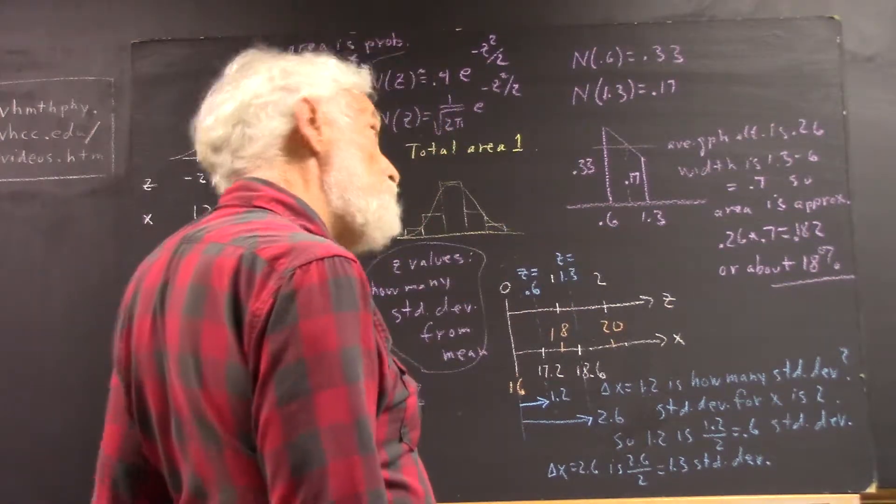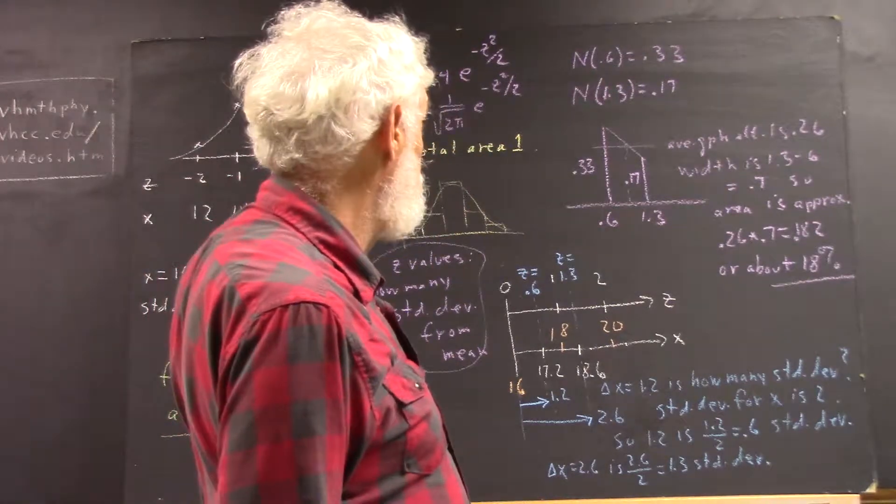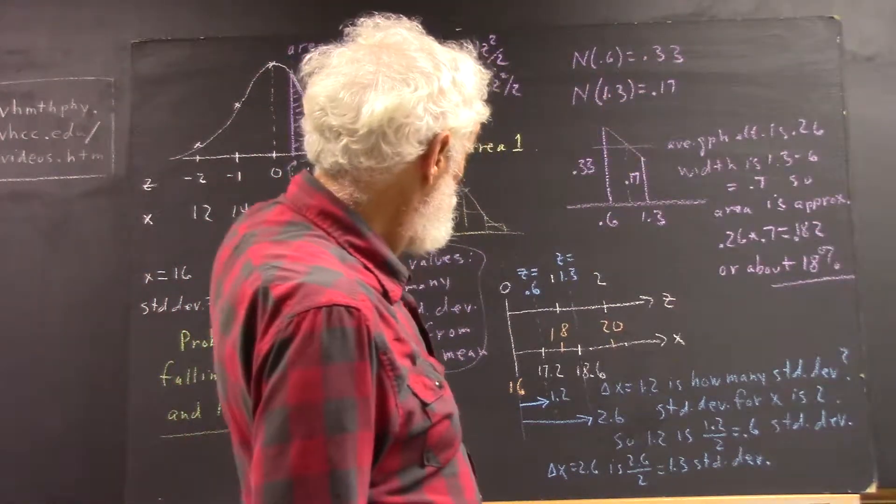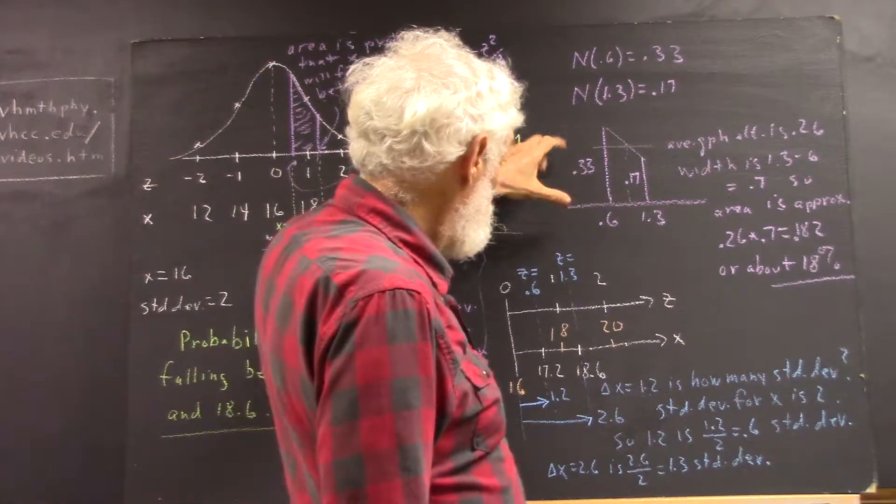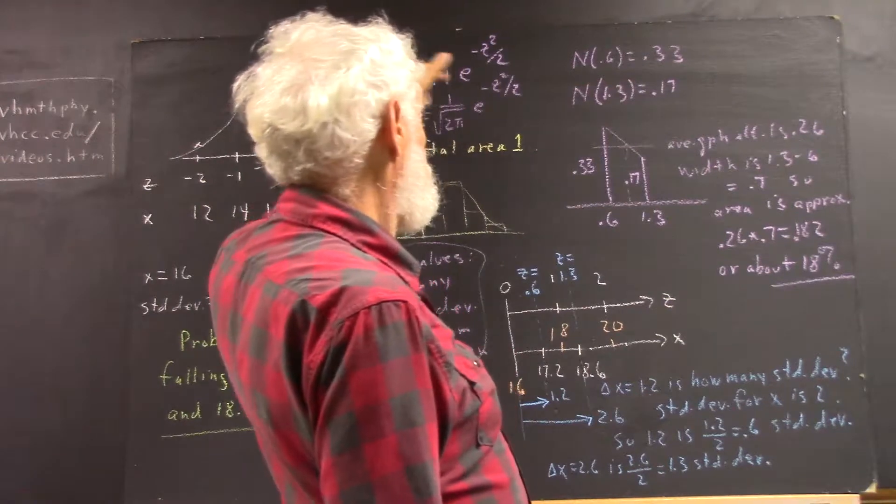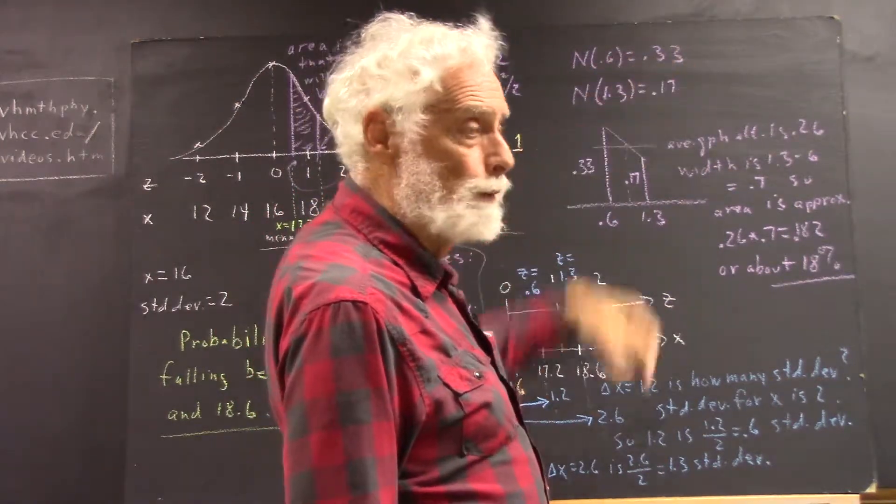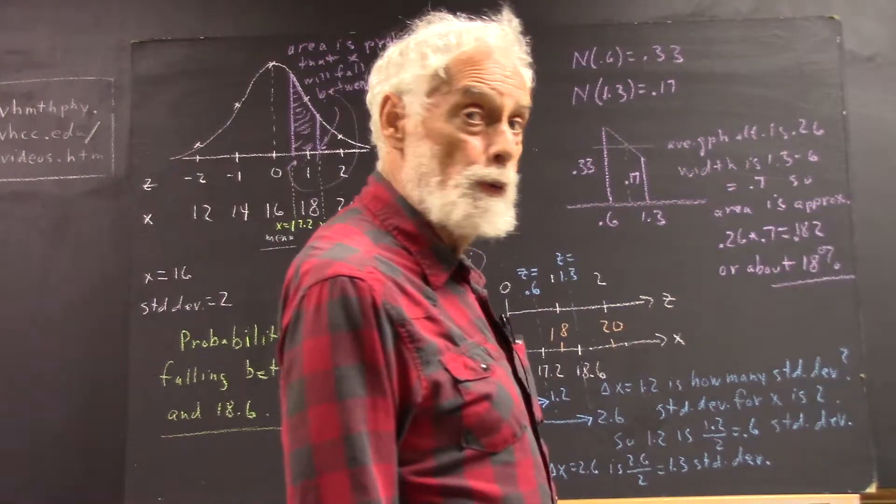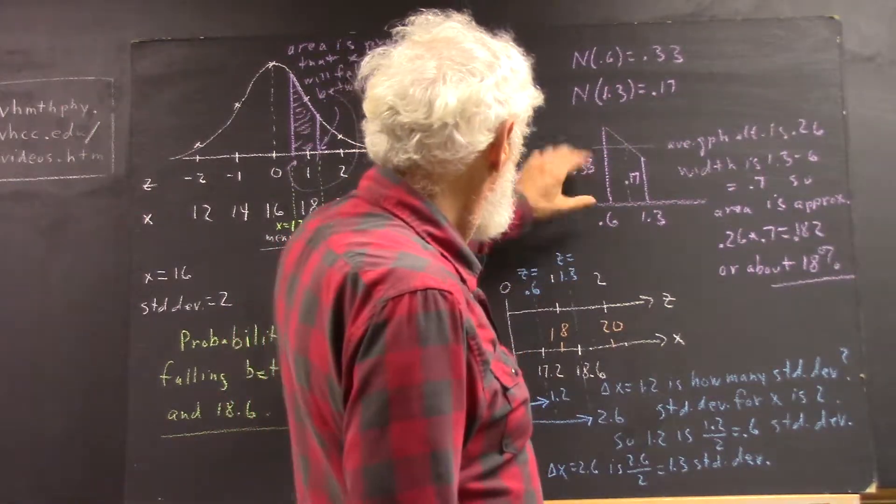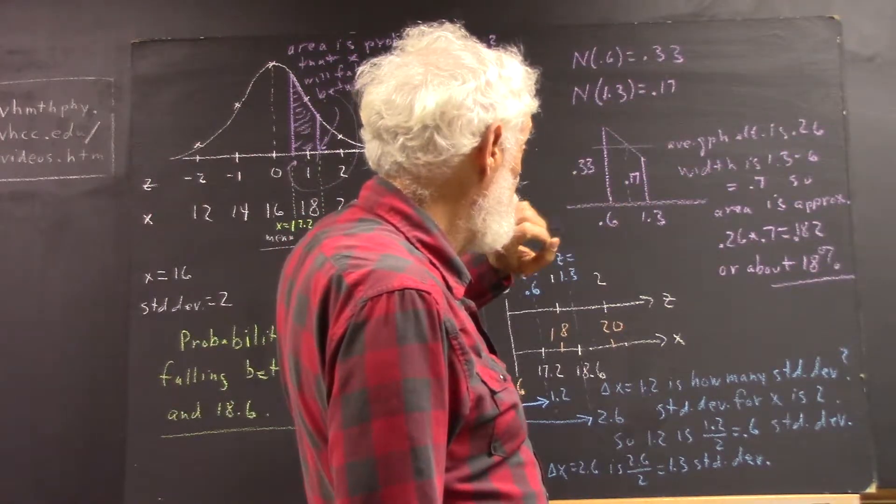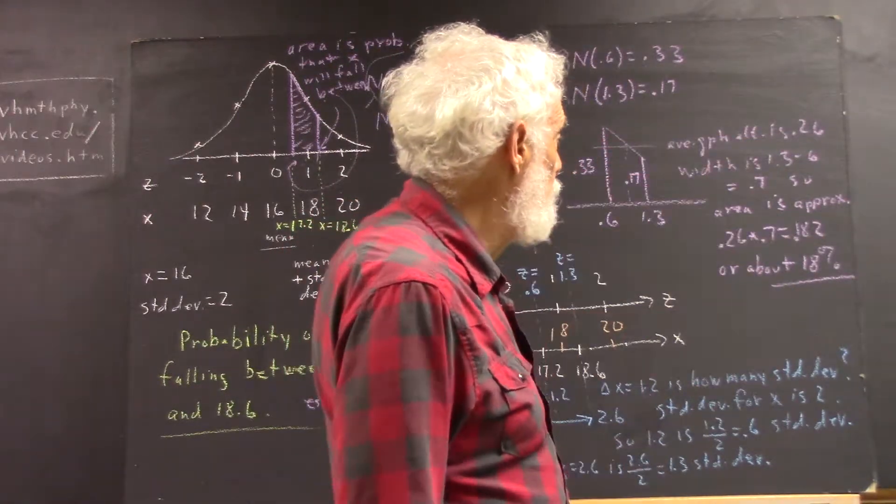Now, how do we estimate, or how do we get our approximate area, the area of this trapezoid? We plug in 0.6 into the N of z function. We get approximately 0.33. We plug in 1.3. We get approximately 0.17. So now our trapezoid takes shape. We have 0.33 here, 0.17 here. Our average graph altitude, then, is what we get when we add these and divide by 2.